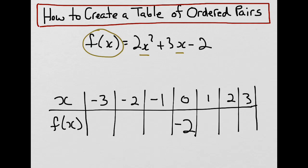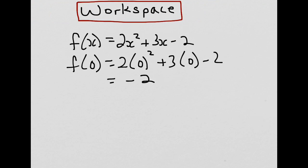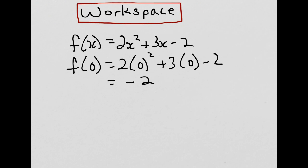Let's do a couple more calculations in our workspace. One of the values we selected was negative 3. So, let's see how that would work. 2 times negative 3 squared plus 3 times negative 3, minus 2.